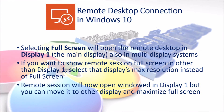Selecting Full Screen will open the remote desktop in Display 1, the main display, also in multi-display systems. If you want to show the remote session full screen on a display other than Display 1, select that display's max resolution instead of Full Screen. The remote session will then open windowed in Display 1, but you can move it to the other display and maximize to full screen.